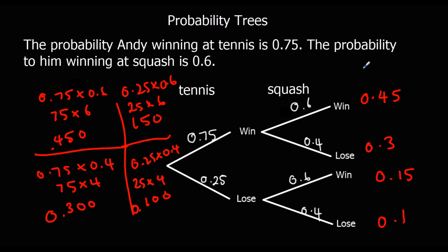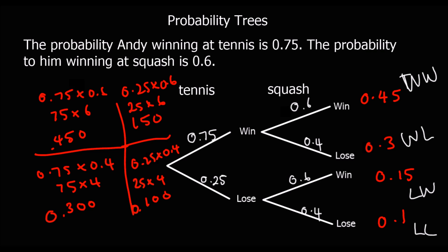There's a good chance you'll be able to use a calculator for that question, but that's how you multiply decimals without a calculator. So the chance of winning at tennis and squash — win-win — is zero point four five. Win-lose is zero point three. Lose-win is zero point one five. And lose-lose is zero point one. Sometimes you might be asked: what's the probability of winning one game? You have to recognise it could be win-lose or lose-win, so you add the two probabilities — zero point three plus zero point one five — giving zero point four five.